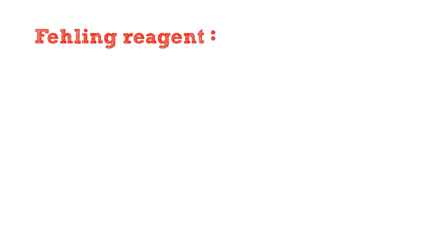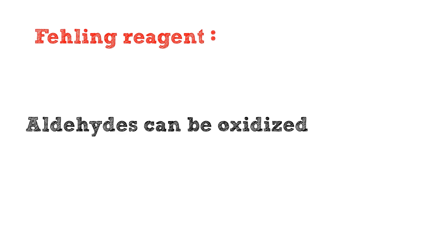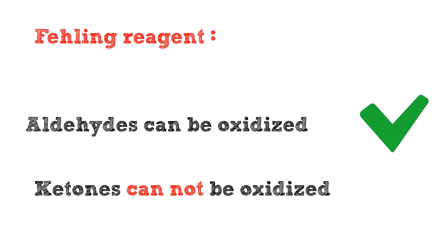Now let's see how to use Fehling's solution to distinguish between aldehydes and ketones. The same principle used with Tollens' reagent is used with Fehling's solution. For aldehydes, they will further oxidize into the corresponding carboxylic acids. For ketones, nothing will happen.